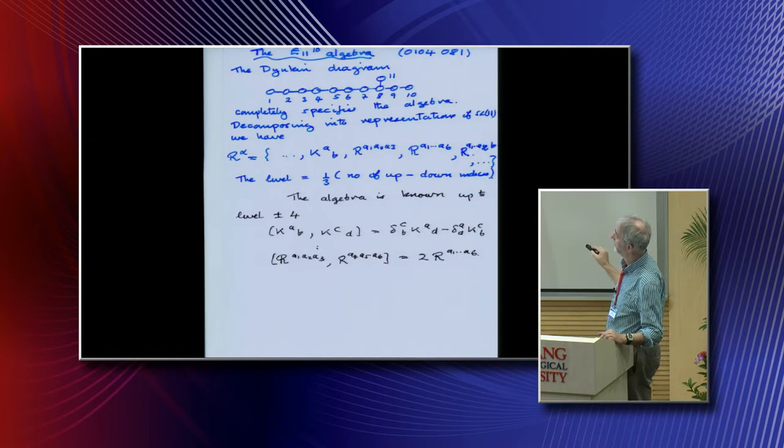At level one, you find this object with three indices, six indices, eight indices, and another one, and on you go. I want to reassure you that at least up to level four, this algebra is written down. This is the algebra of SL11, and this thing here is level one. Level one with level one gives level two, and the only generator at level two is this one. You can carry on like this.